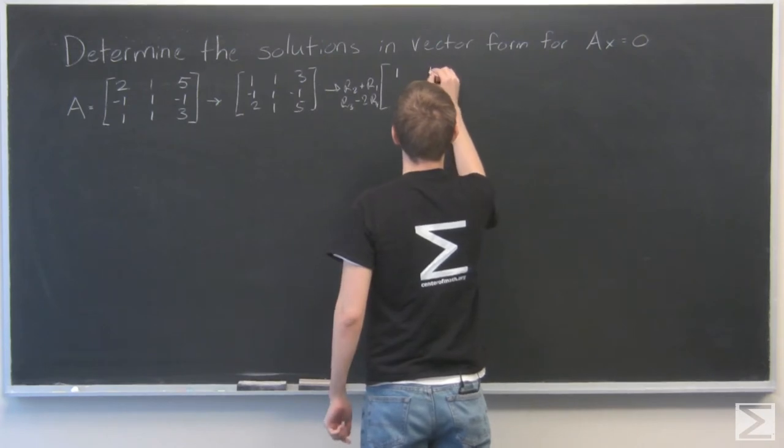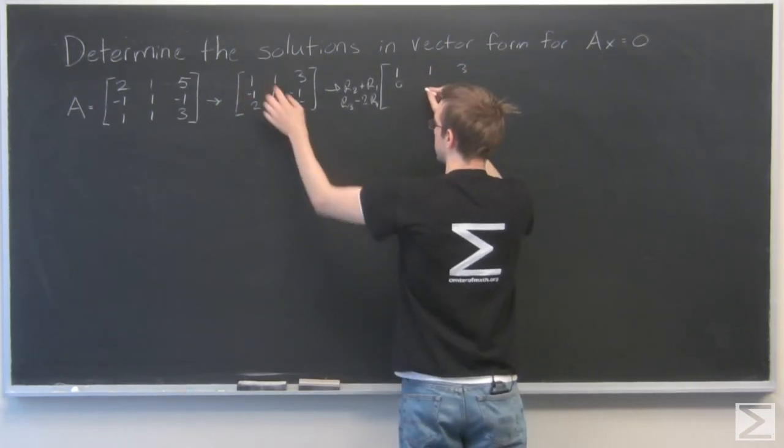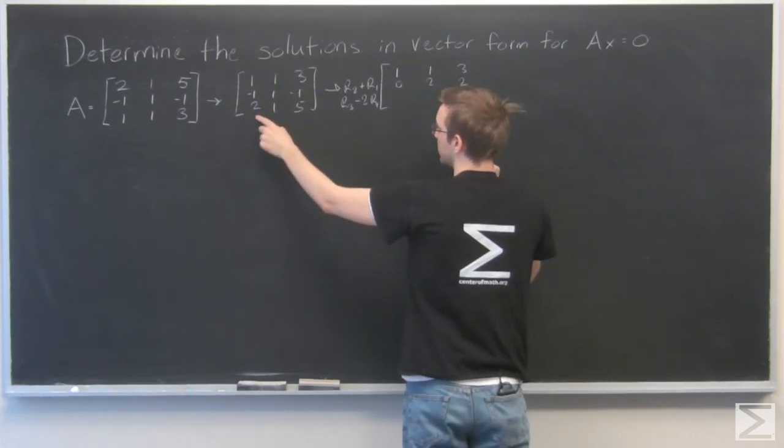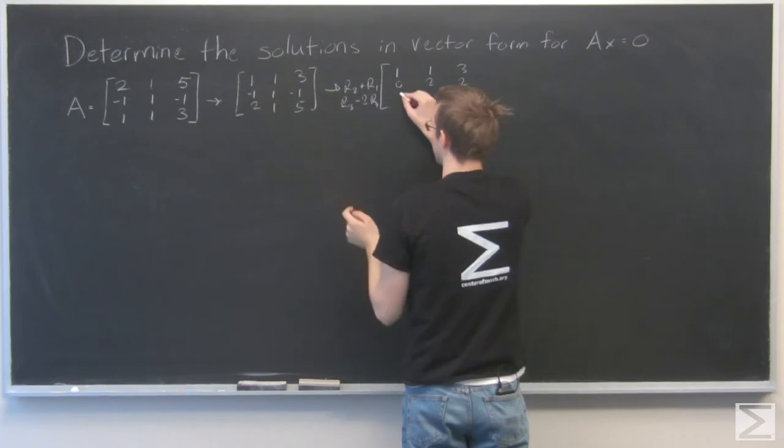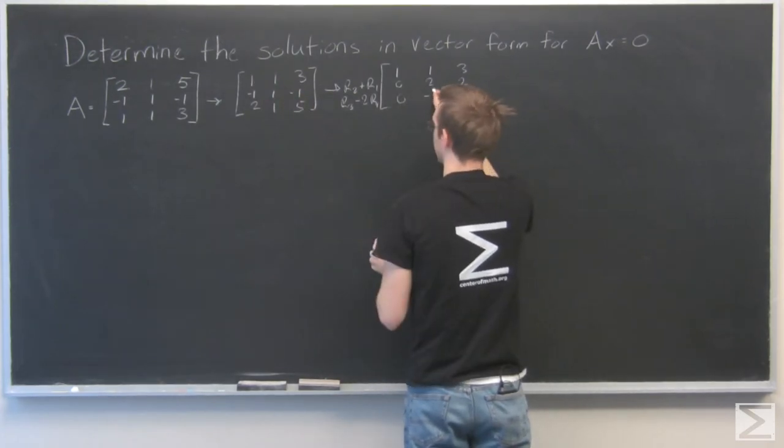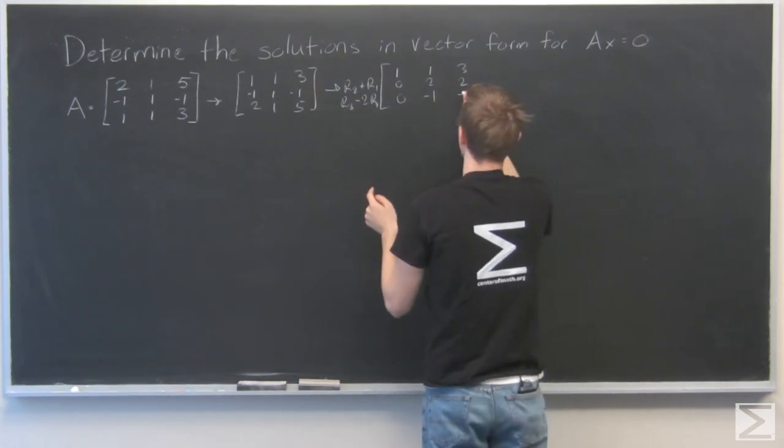So row 1 stays as 1, 1, 3. Add these two together, you get 0. These two together, you get 2. These two together, you get 2. 3 minus 1 is 2. And 2 minus 1 minus 1 is 0. 1 minus 1 minus 1 again is negative 1. And 5 minus 3 is 2, minus 2 again is negative 1 again.